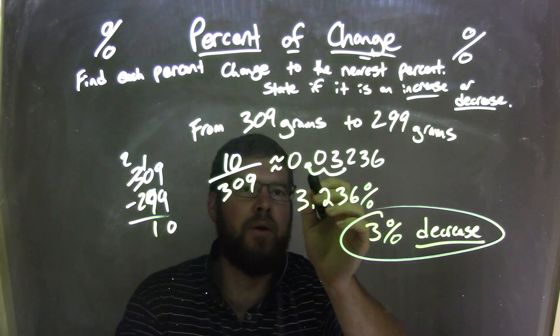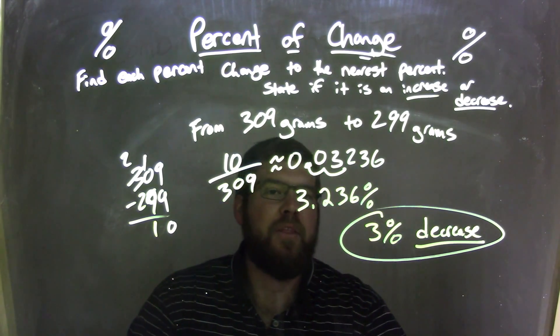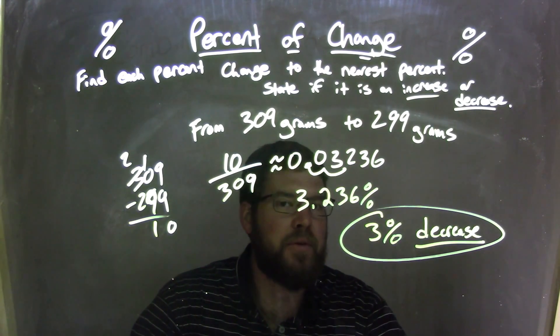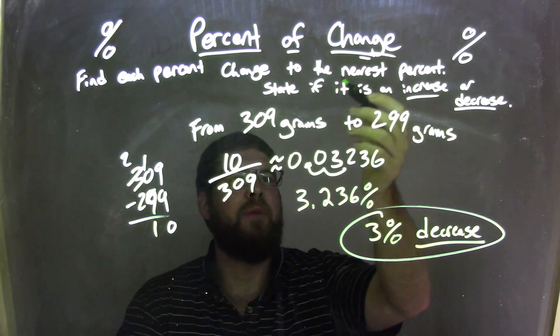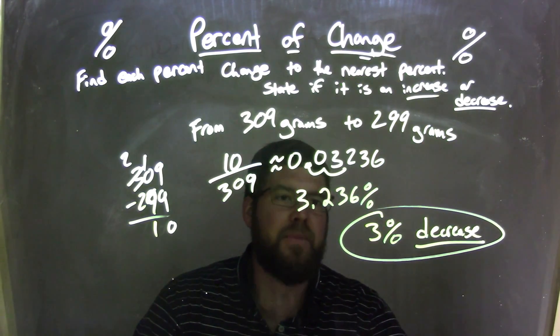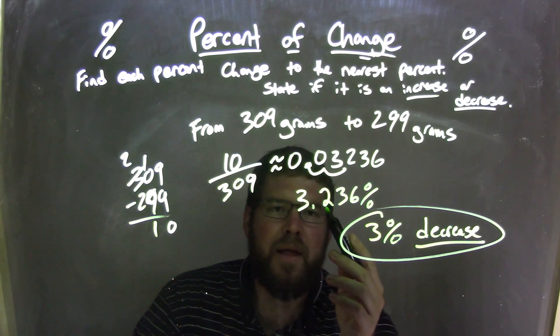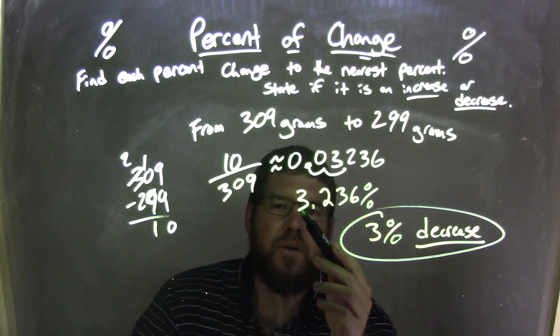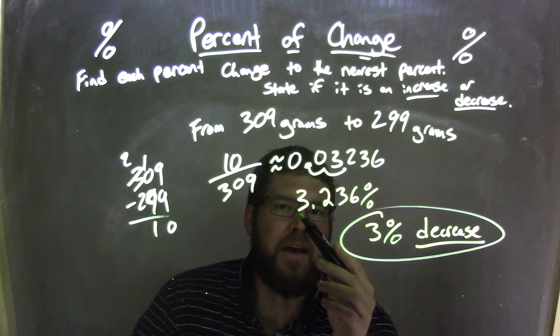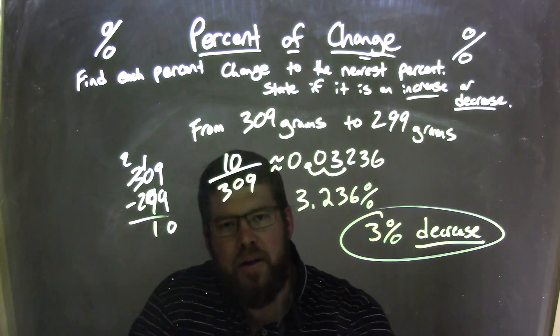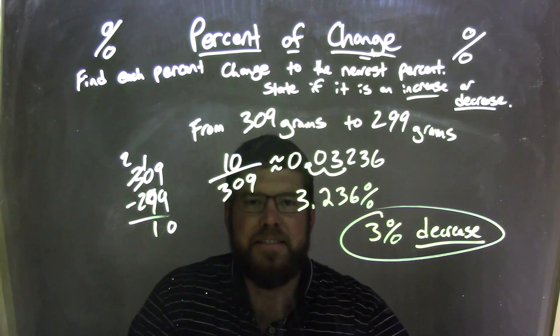That decimal needs to move two units to the right, 1, 2, to get 3.236, a percent. That's how we convert the decimal to a percent. But now we need to round it because they say round to the nearest percent. Well that 0.2, that 2 right there, causes the 3 to move up or down. Since it's 4 and less, we make that round down so it stays to be a 3. So we have a final answer here of a 3 percent decrease.